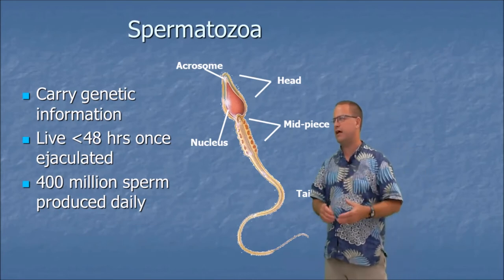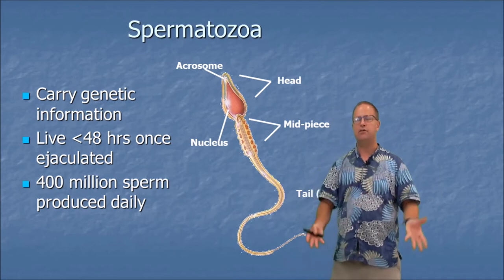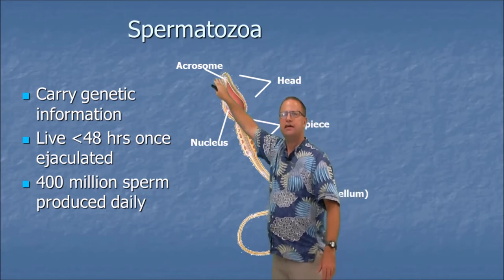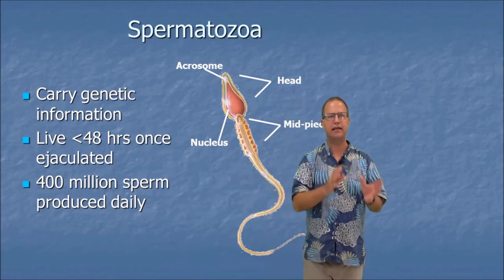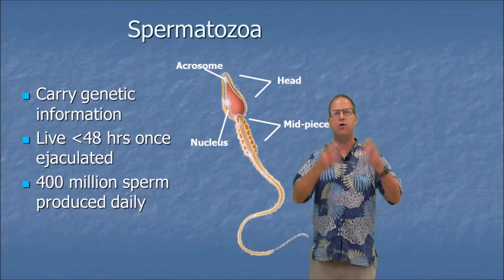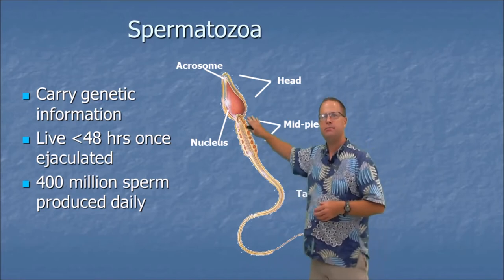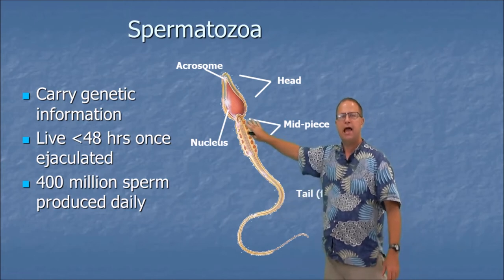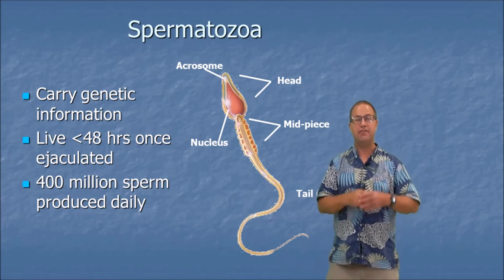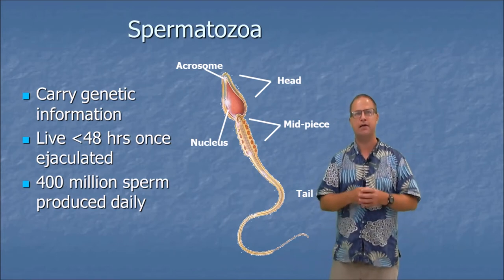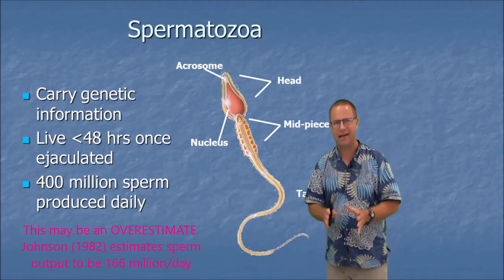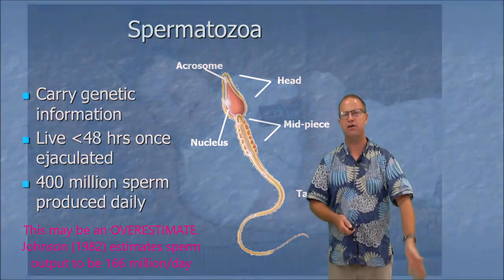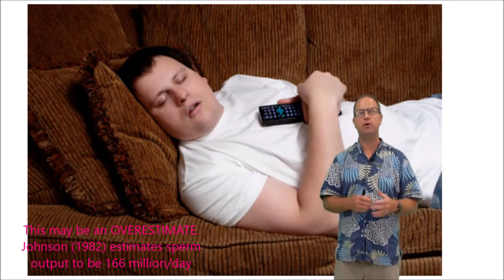Spermatogenesis is by and large a meiotic type of cell division — one cell divides meiotically to make four genetically distinct cells, each with half the chromosomes of the parent cell. Looking at the anatomy of spermatozoa: the head contains the nucleus with the male's genetic information, covered by the acrosome — a capsule containing hydrolytic enzymes that digest through the zona pellucida of the egg. The midpiece has lots of mitochondria generating flagellar movement, extracting energy from the seminal fluid. Males produce around 400 million sperm per day.